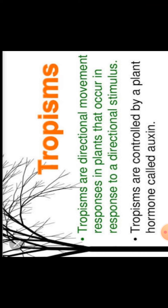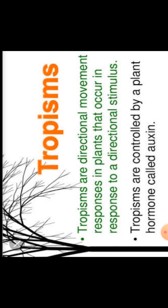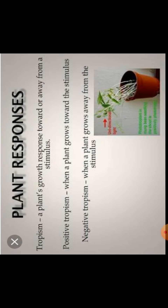Tropisms are controlled by a plant hormone called auxin. Auxin ka isme major role hai. We will be discussing in detail in the next lecture how auxin helps in trophic movement in stems and roots.